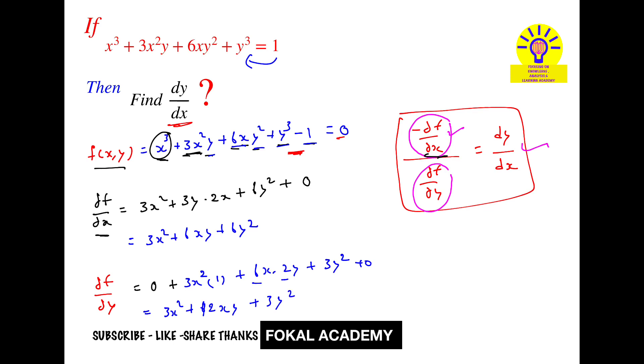Now substitute this equation 1 and this equation 2 in this formula and we get dy by dx. So dy by dx equals - equation 1 has a minus sign, so minus of 3x square plus 6xy plus 6y square upon equation 2, that is 3x square plus 12xy plus 3y square.